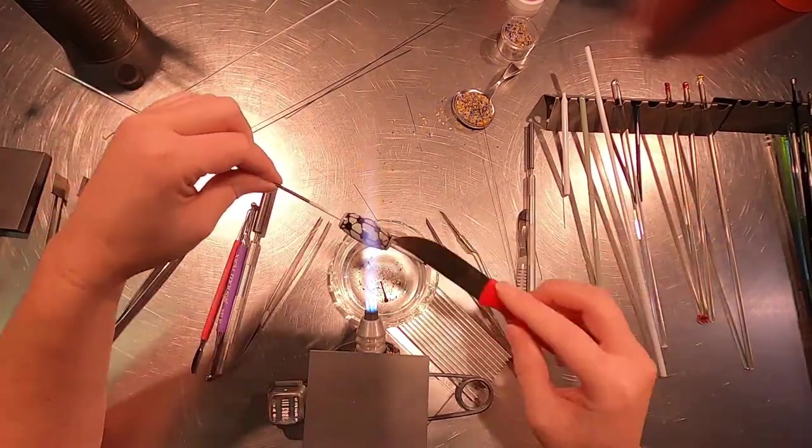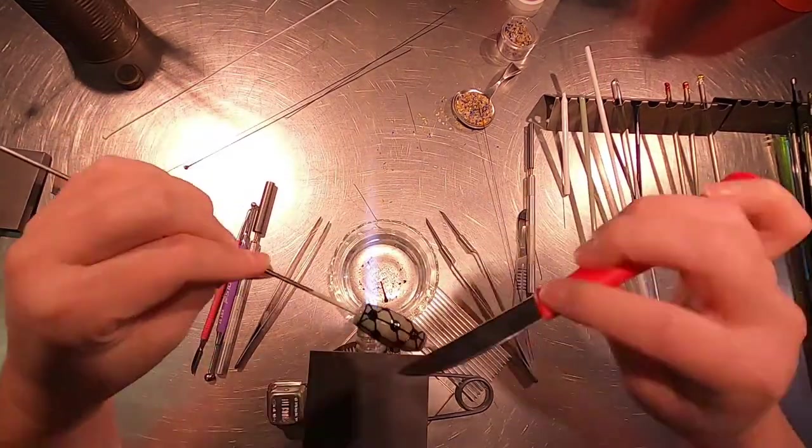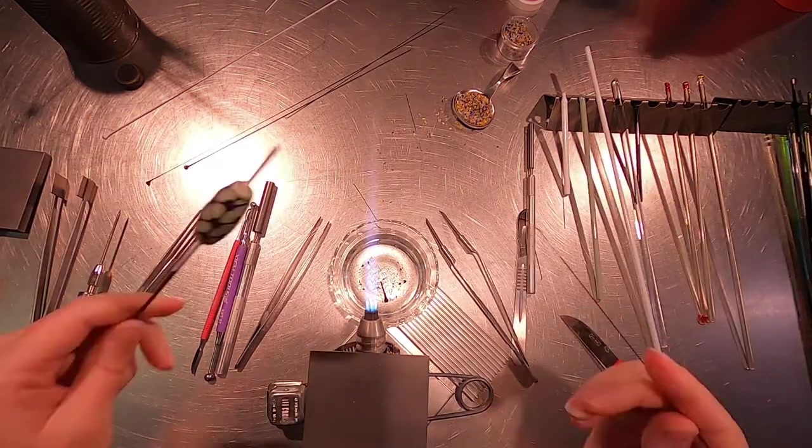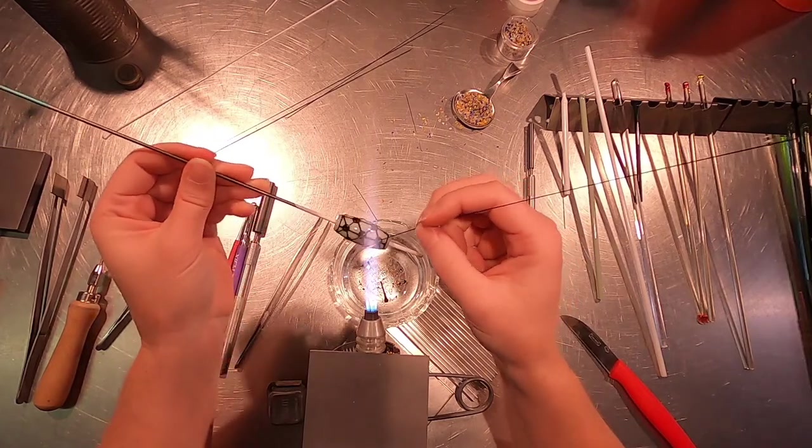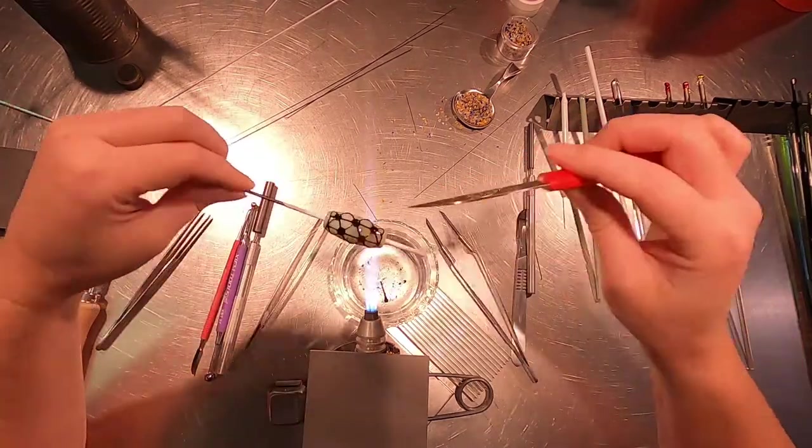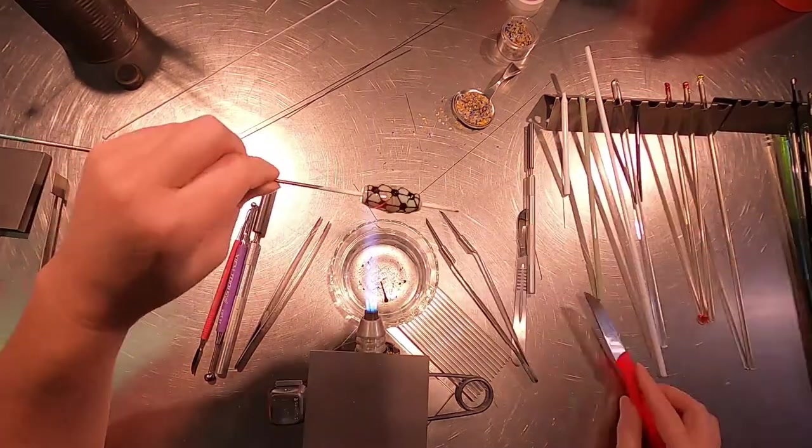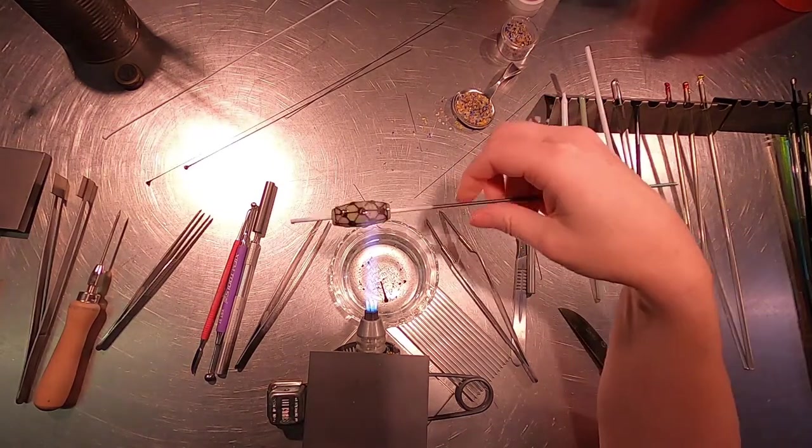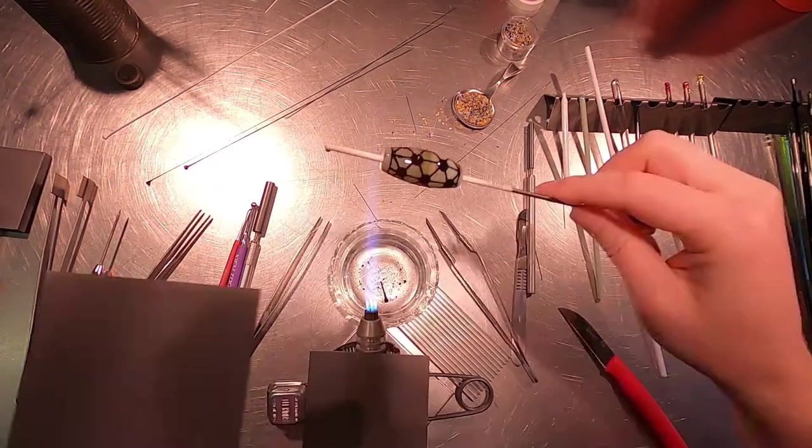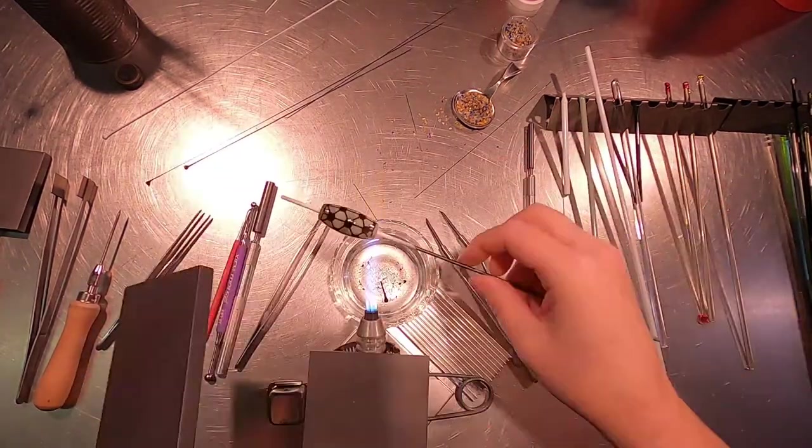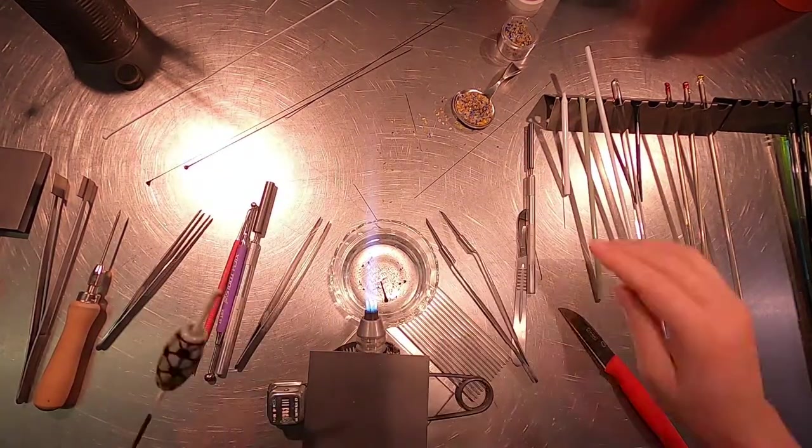Thin line work on a bead can seem daunting, but just remember that your flame is cone-shaped, and you don't have to use the center of that heat. If you can find the heat at the edges of your flame, you can develop the minute heat control it takes to put intricate line work on a bead. I carefully melt all of my lines in and give it a quick reshape. I'm also being careful not to pull the glass or distort my pattern as I'm reshaping each time.